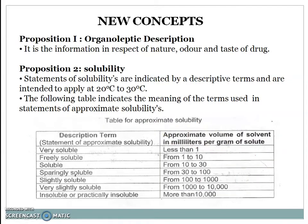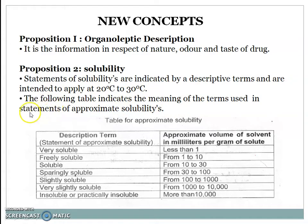Let's start with concepts. Proposition 1 — Organoleptic Description: it is the information in respect of the nature, odor, and taste of the drug. Proposition 2 — Solubility: statements of solubilities are indicated by descriptive terms and are intended to apply at 20°C to 30°C. The following table indicates the meaning of the terms used in the statement of approximate solubility.